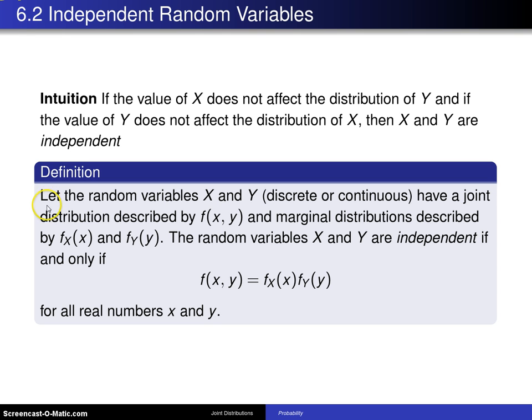Here is the formal definition. Let the random variables x and y, which can be either discrete or continuous, have a joint distribution described by f of x y. If the random variables are discrete then f of x y is a joint probability mass function. If x and y are continuous then f of x y is a joint probability density function, and it has marginal distributions described by f x of x and f y of y.